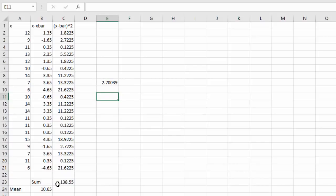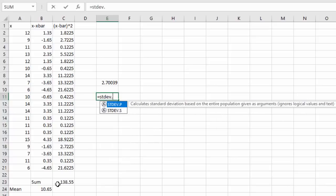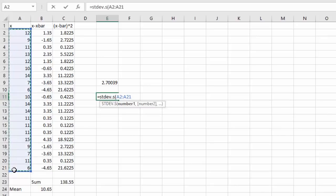Now I could have found that standard deviation by just hitting equals stdev.s for sample. Open a parenthesis. And select all my original data. When I hit enter you see it gives me the exact same value.